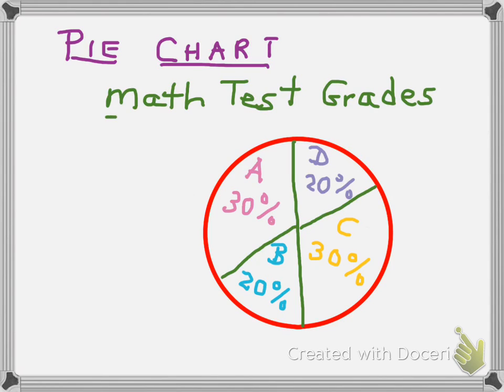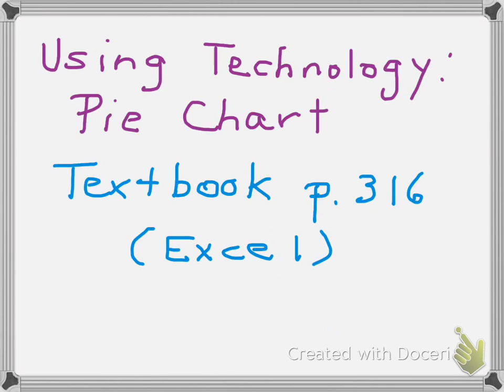So for our pie chart, we definitely need a title, which again is math test grades. And then each one of these is a piece of pie. So our A was 30%, B was 20%, C was 30%, and D was 20%. And again, it must add up to 100%, and each one is a piece of pie. And again, to make this pie chart look a lot neater, you're going to use technology. And I'm going to direct you to the textbook, page 316, which again uses Excel.